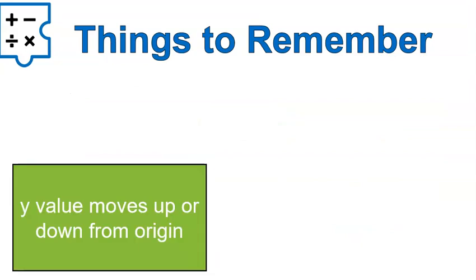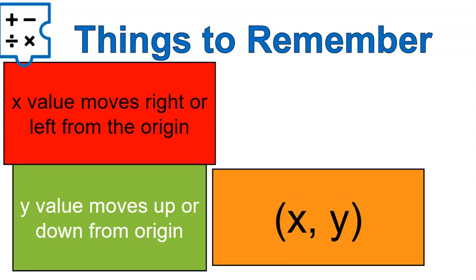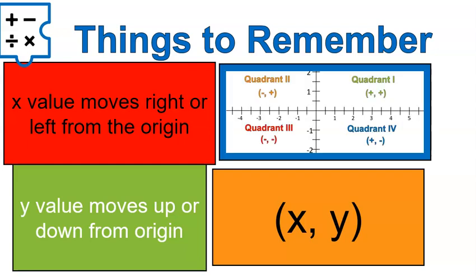A couple of things to keep in mind: y-values move up or down from the origin, x-values move right or left. Your ordered pairs are always in the order x, y — right and left movement, then up and down movement. As far as your quadrants go, keep a copy of the quadrant reference because you will definitely need it for the worksheet and the quiz. Good luck on the worksheet. Make sure to practice, and good luck on that quiz. Have a wonderful day.